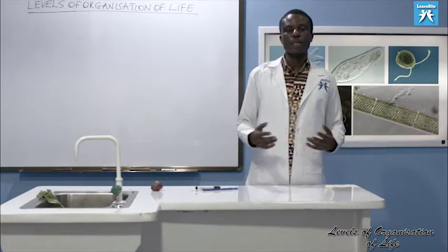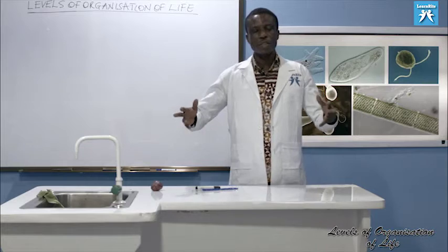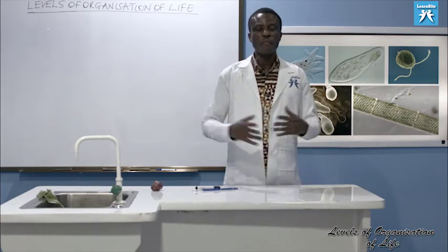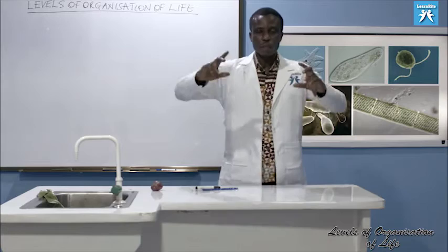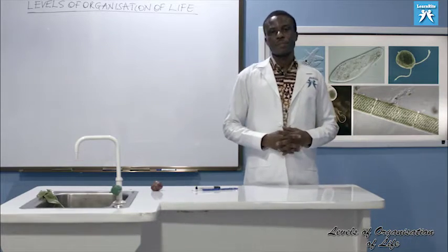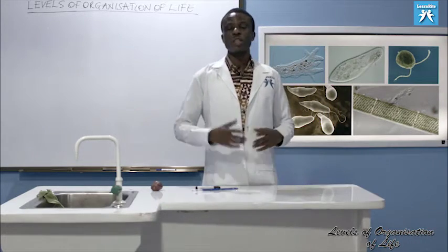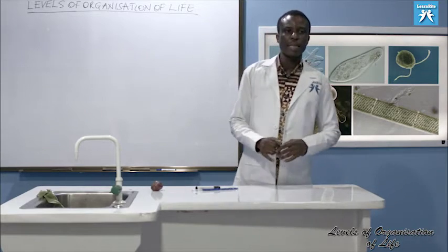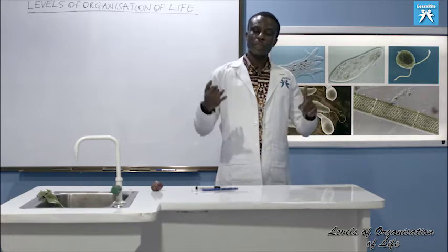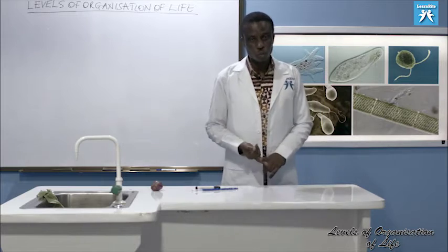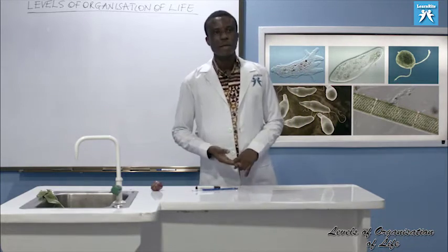A group of specialized cells forms a tissue, and several tissues form an organ that performs one or more functions. Several organs collectively perform a particular function for the living thing. There are five levels of organization: cell, specialized cell, tissue, organ, organ system, and organism.